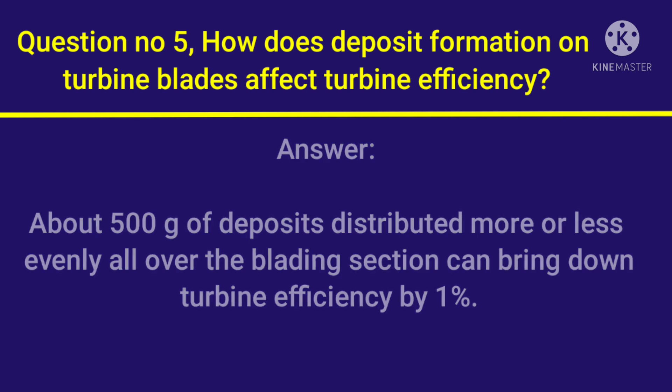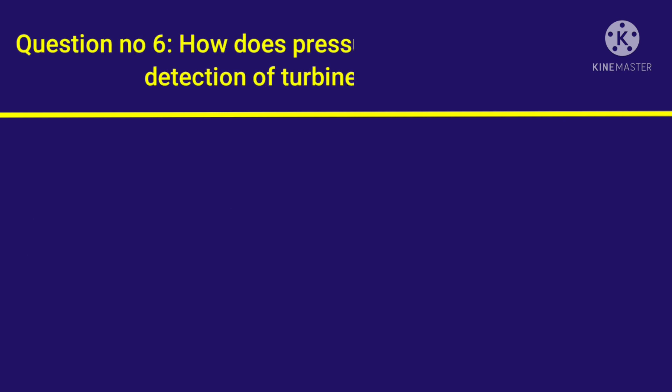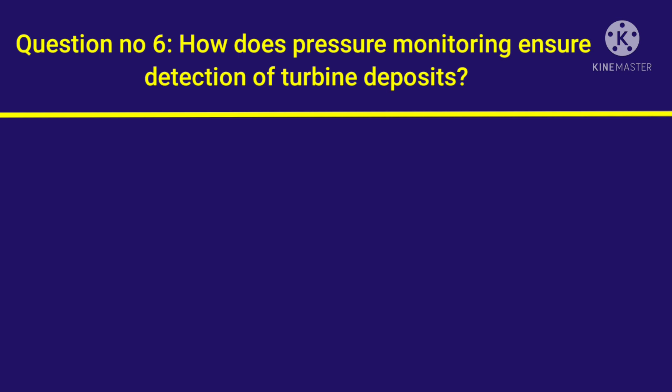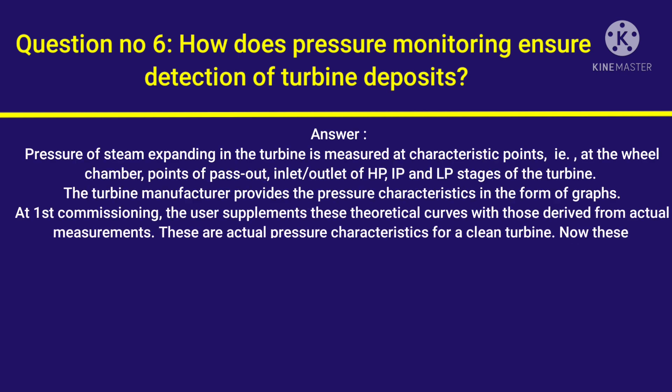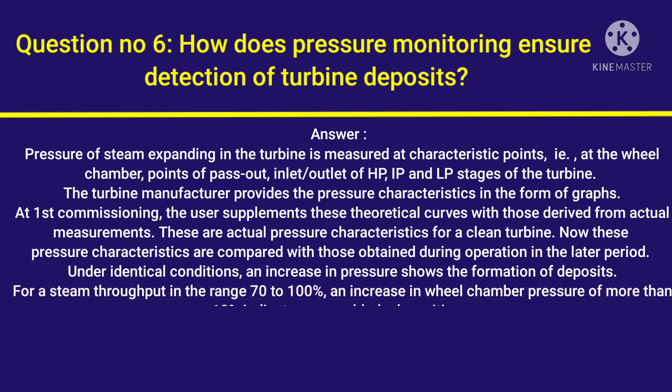Question number 6: How does pressure monitoring ensure detection of turbine deposits? Answer: Pressure of steam expanding in the turbine is measured at characteristic points — i.e., at the wheel chamber, points of pass-out, inlet, outlet of HP, IP, and LP stages of the turbine.